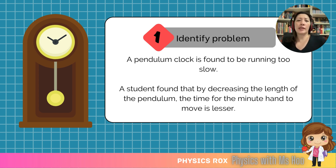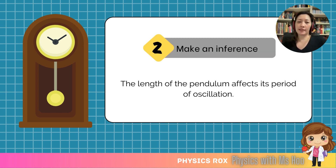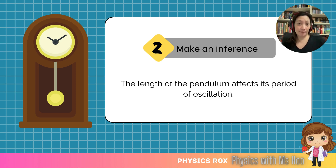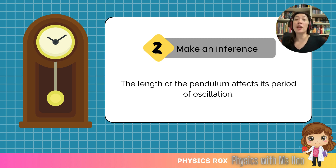First of all, we need to make an inference. From the problem, we can infer that changing the length of the pendulum changes its period of oscillation — that's why the minute hand takes less time to make its complete round. An inference is just a general relationship between two identified variables. So we can write that the length of the pendulum affects its period of oscillation.